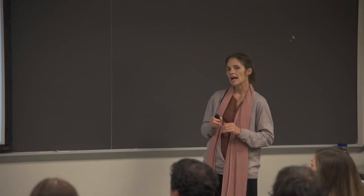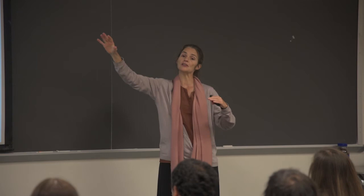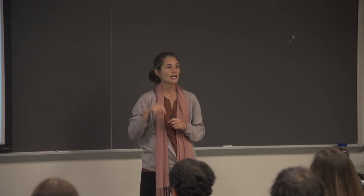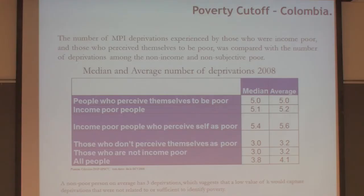People who did not perceive themselves to be poor on average still experienced 3 out of 15 — about 20% — deprivations. Similarly, people who were not income-poor experienced 20% of deprivations. So they set the poverty cut-off at 5 out of 15, or 33%. That's how they justified it — a combination of subjective and income poverty. They also had a normative justification in terms of their indicators.